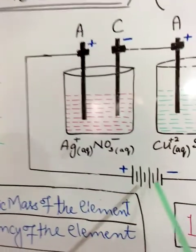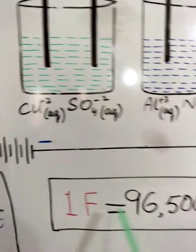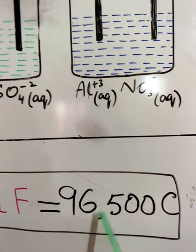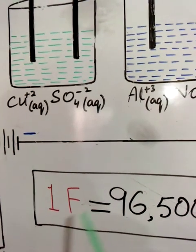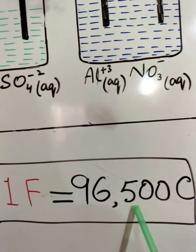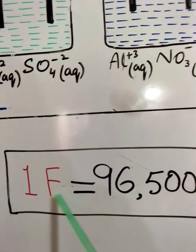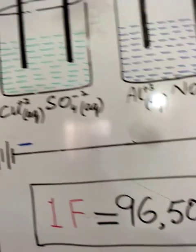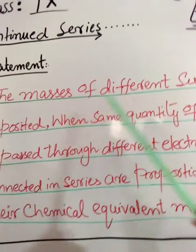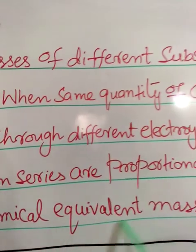The amount of electric charge passed was 96,500 coulombs. Since the coulomb is the unit of electric charge, this amount passed by Faraday is called one Faraday - one Faraday contains 96,500 coulombs. The statement of the Second Law says: the masses of different substances deposited when the same quantity of current is passed through different electrolytes connected in series are proportional to their chemical equivalent masses.